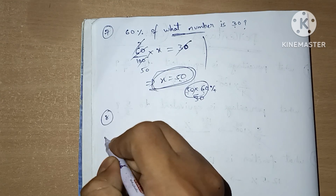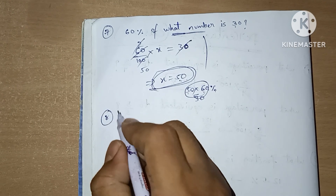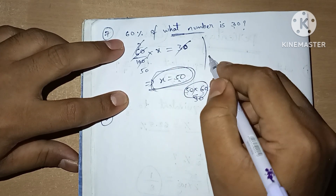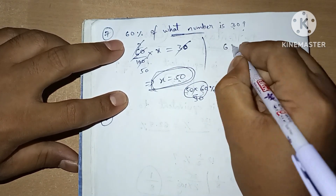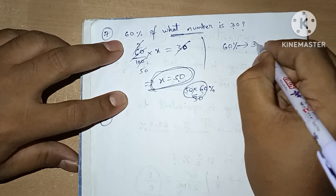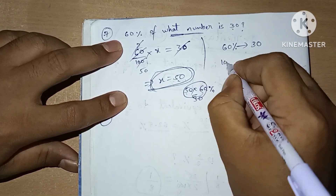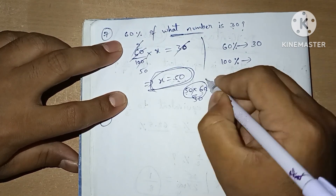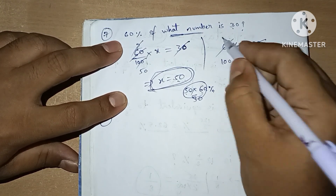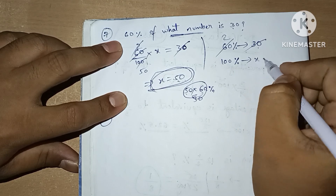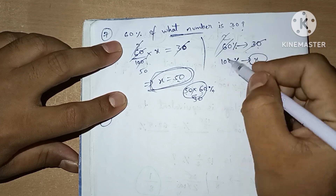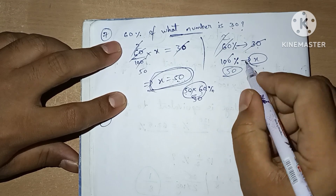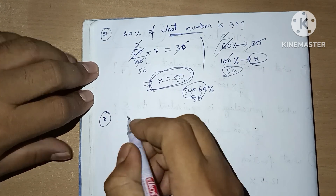Before going to question 8, we'll see how to do question 7 in mind calculations. 60% value is 30. 100% is the total. Since 60% is 30, the total is 30 times 100/60, which is 50. So our number is 50. This is the mind calculation approach.